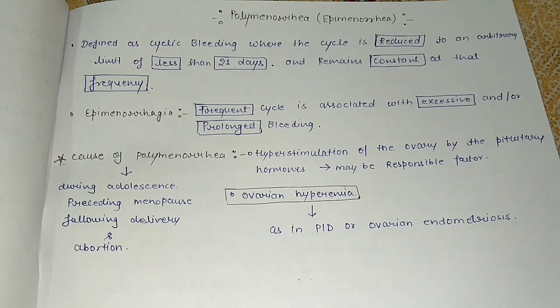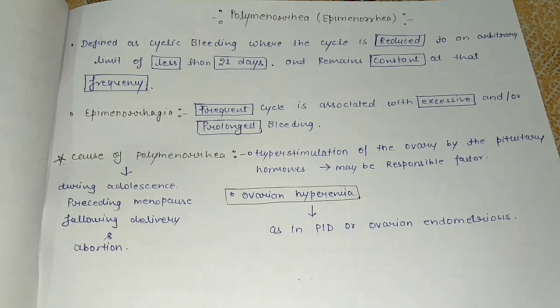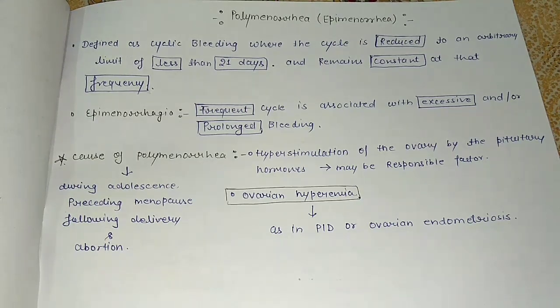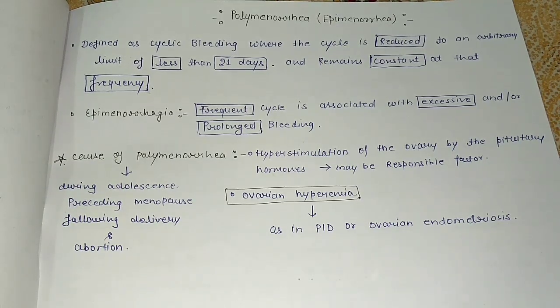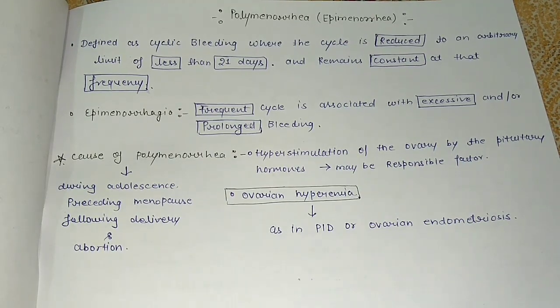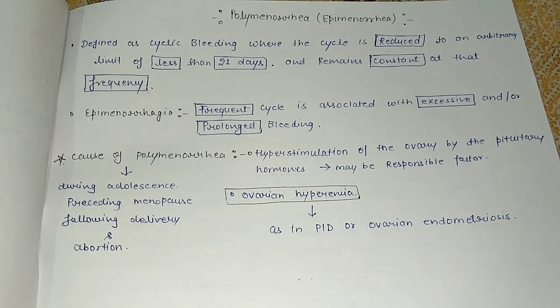Hey guys, welcome to this channel Learn with Fun Biology. Today I am going to talk about polymenorrhea. In the previous video, I talked about the organic causes of menorrhagia. What is menorrhagia? It is cyclic bleeding in which the amount of bleeding is more than 80 ml or the duration of bleeding is more than seven days.